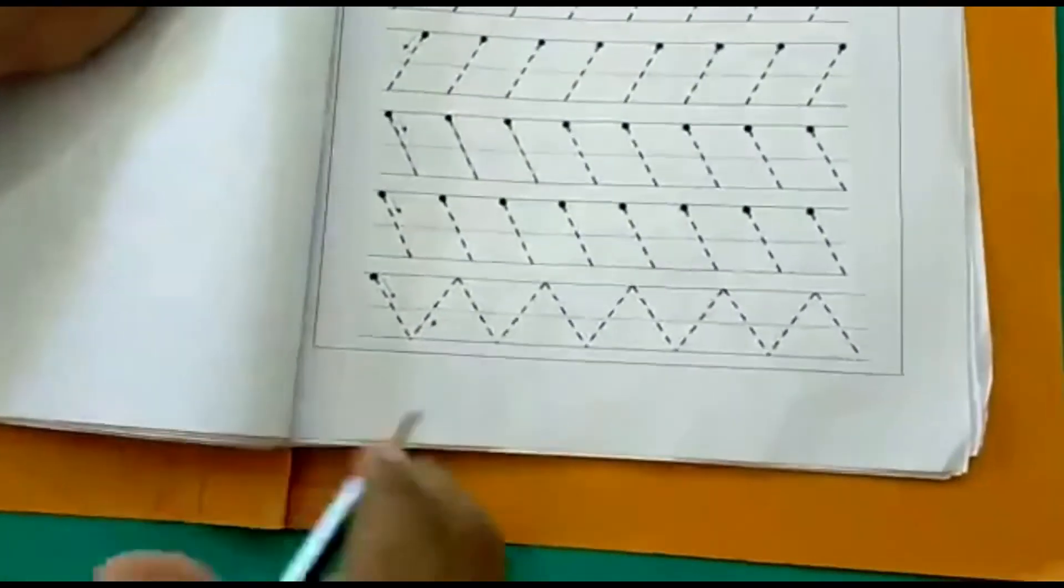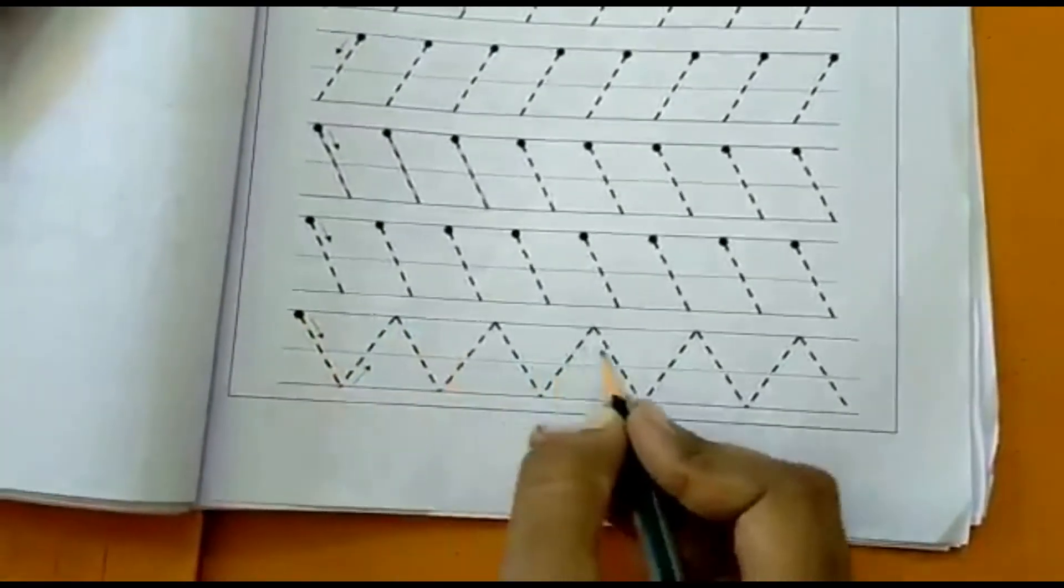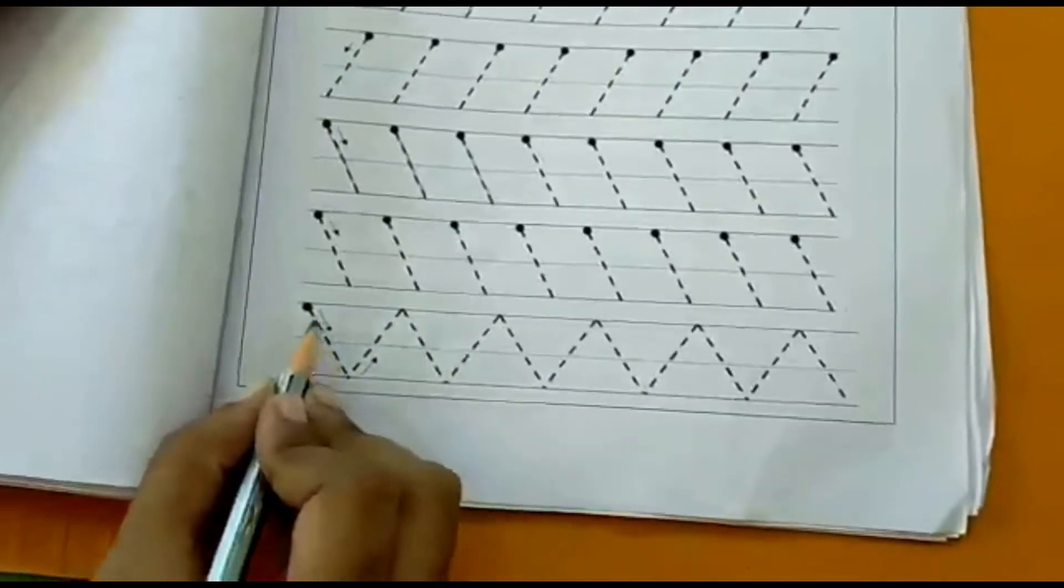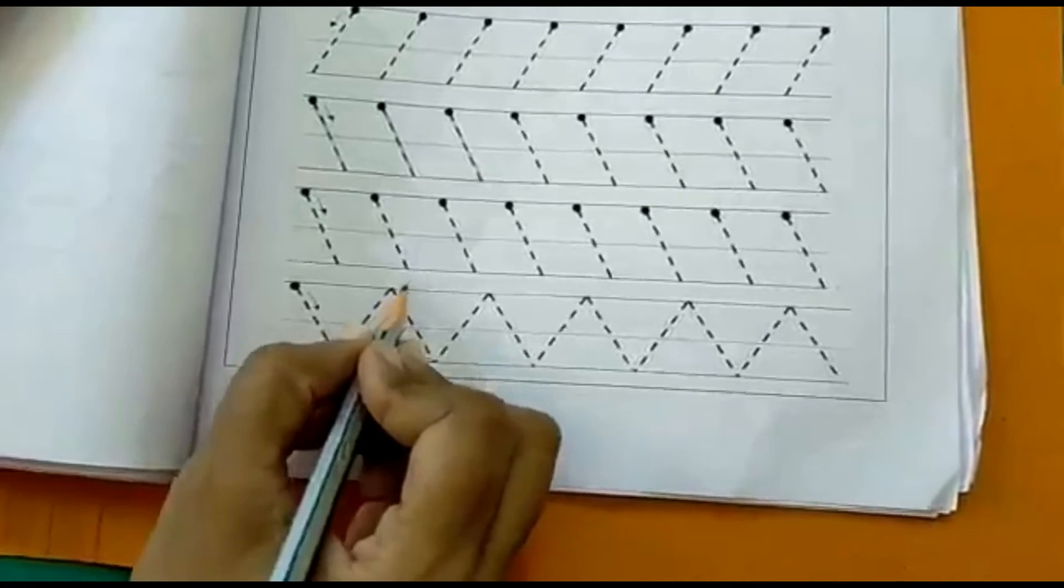And on the last line, we have the up and down lines which are also called a mountain pattern. Okay, so here we will go right then left.